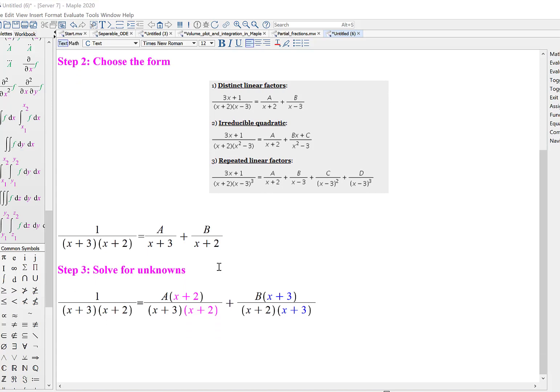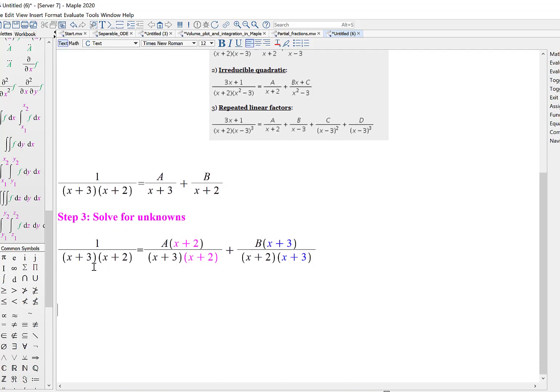Then step 3, I want to solve for the unknowns. At this step, I'll start to type in a little bit so that we can get a sense of how to work through this together. I've got my fraction that I was given, 1 over x plus 2 times x plus 3, and I've written my partial fraction decomposition here with the A and the B.